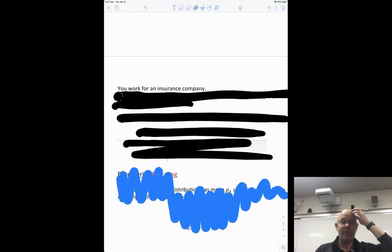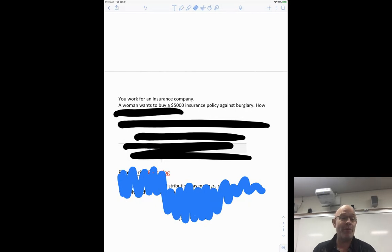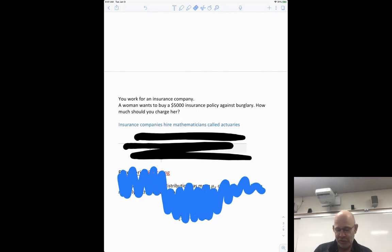Another really common real-world application is insurance companies. So gambling is one. Gambling is a big one that has expected values, has outcomes, how much you expect to win, that sort of thing. Also insurance companies, which, by the way, is gambling. We might have a discussion in class a little bit about insurance. But here's an example. A woman wants to buy a $5,000 insurance policy against burglary. How much should the company charge her? So what this means is I buy a policy. And if I get burglarized, I will get $5,000 from the insurance company. This is not exactly the way it works, but this is oversimplifying it a little bit.